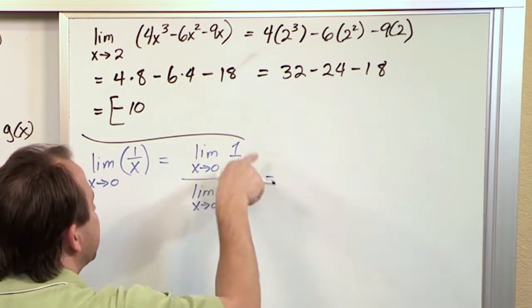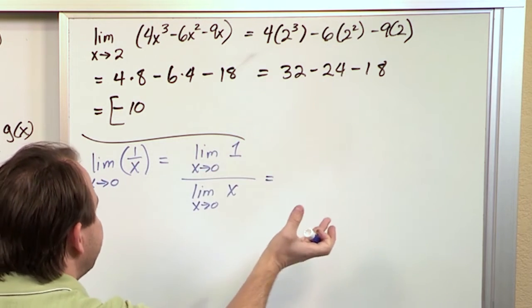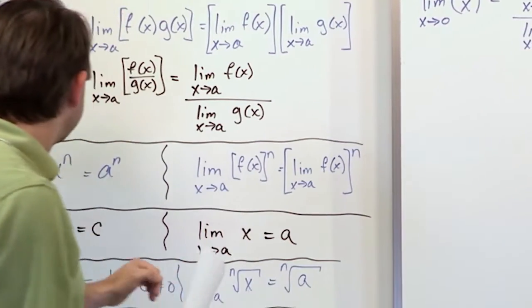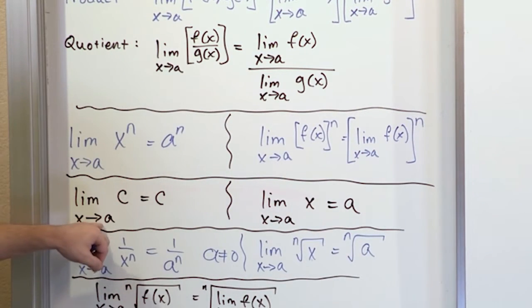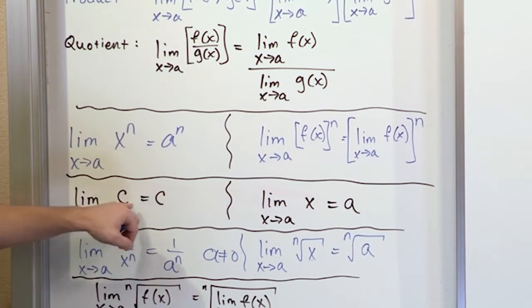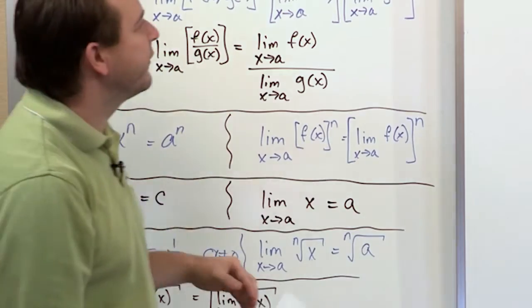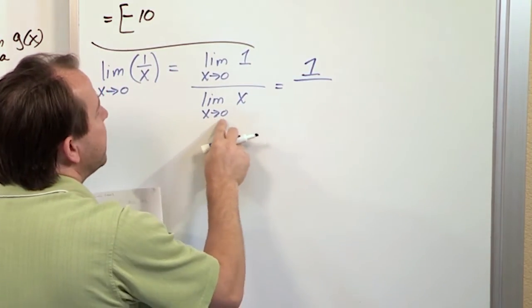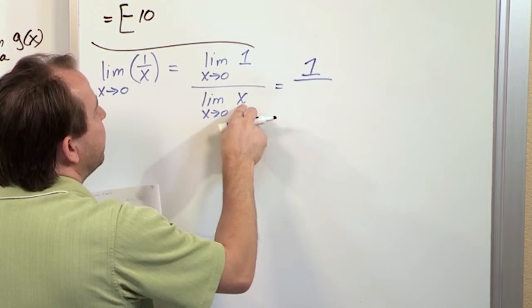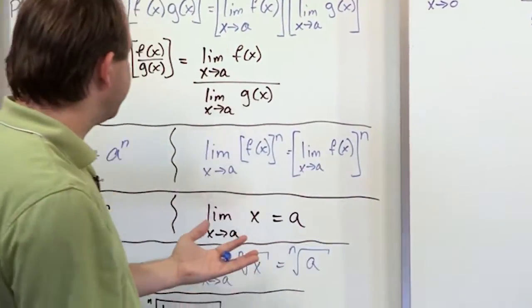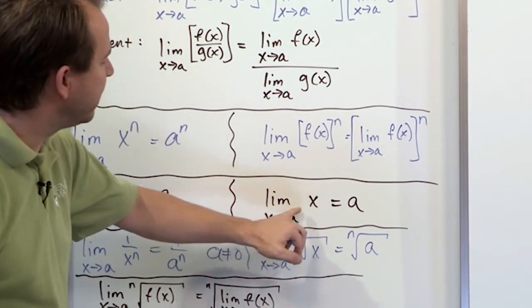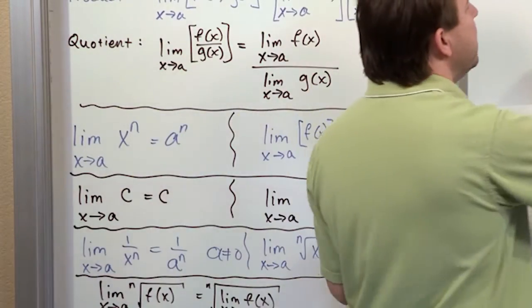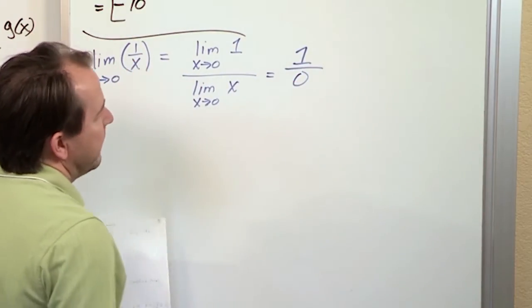So what you have on the top is the limit as x approaches 0 of the number 1, and the limit as x approaches 0 of the function x on the bottom. Now you can continue to use additional limit laws. The limit of a constant for any value you approach is just the same constant because it's a flat horizontal line. So on the top you're going to just have 1. And on the bottom, the limit as x approaches 0 of x — you can plug it in — so it's just going to be the value that you're approaching. We plug 0 in and it goes there.